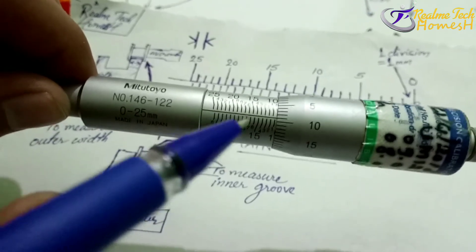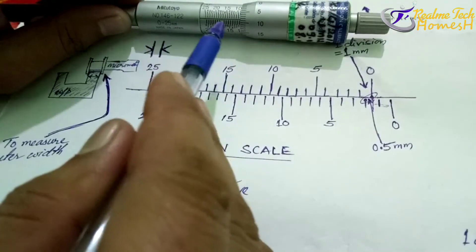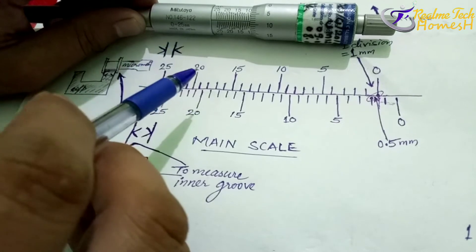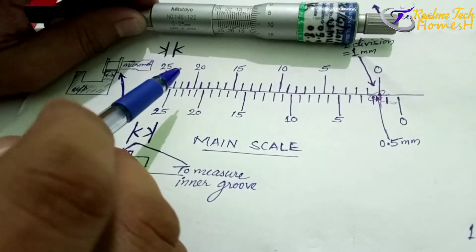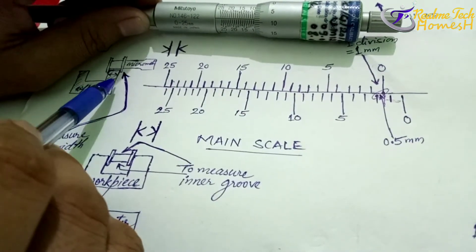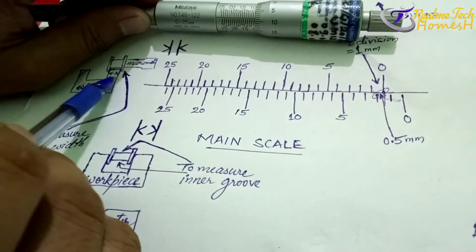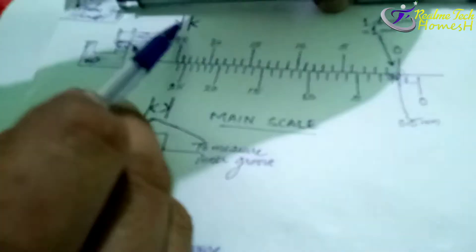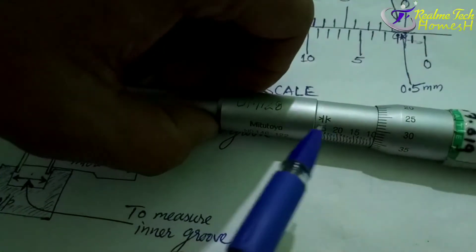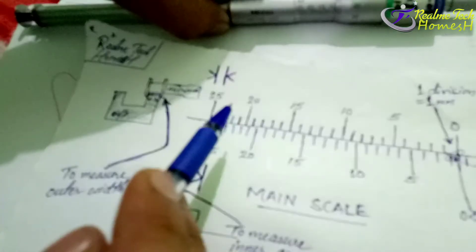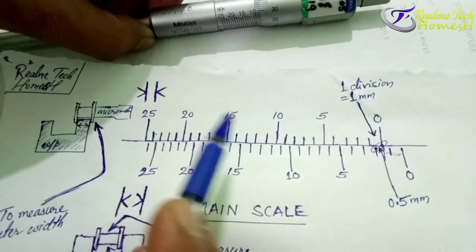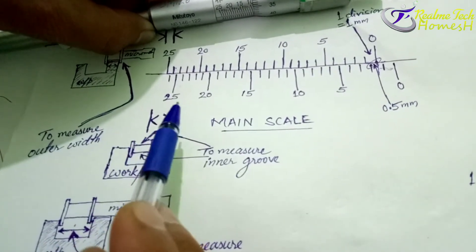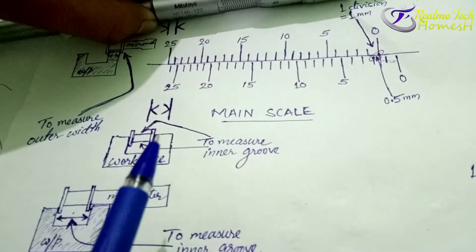On the main scale, the divisions above the line are used for measuring outer grooves, and the divisions below the line are used for measuring internal groove thickness. For example, if we want to measure the outer groove thickness of a workpiece — from here to here — we prefer the above scale. If we want to measure the internal thickness of a groove, we prefer the below scale.